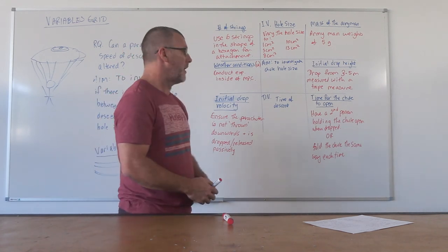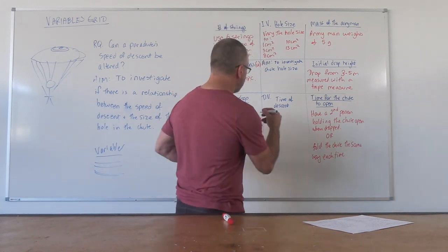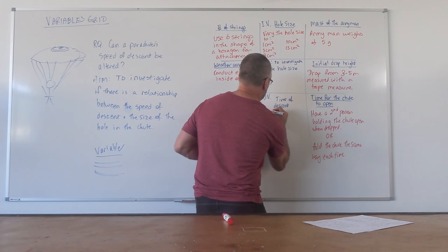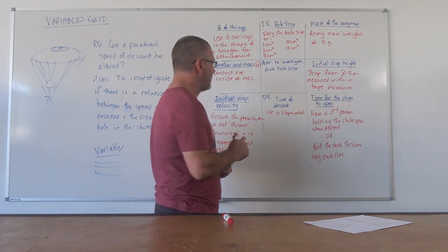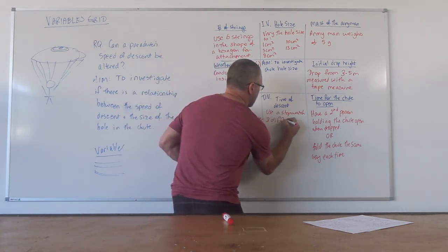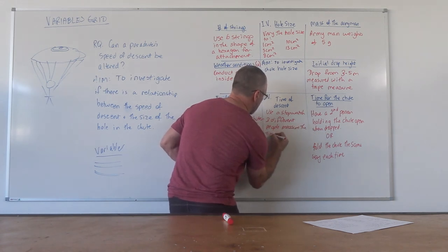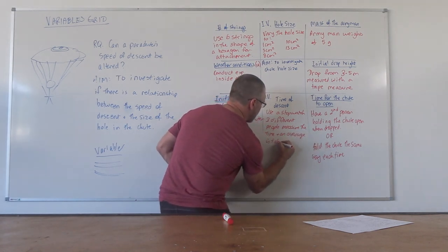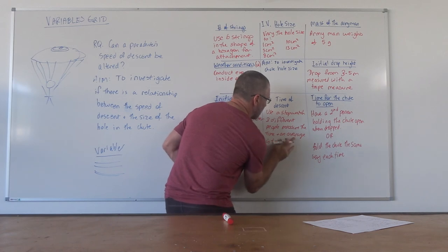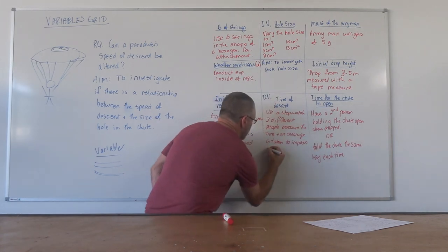The dependent variable, which is the time of descent, we're going to measure. In this one, we're going to use a stopwatch. And to try and eliminate variables a little bit, three different people measure the time. And an average is taken to improve precision.